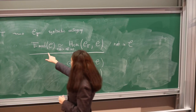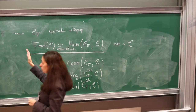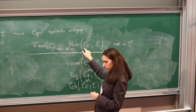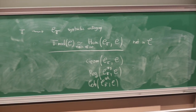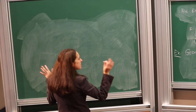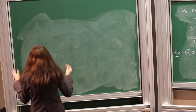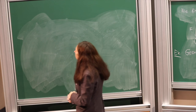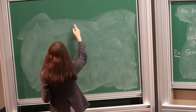We have this functorial understanding of models: models correspond to functors. Now we need to see how both the construction of the syntactic category and the definition of this equivalence work. Before doing that, let's give a few examples to make the abstract definitions concrete.